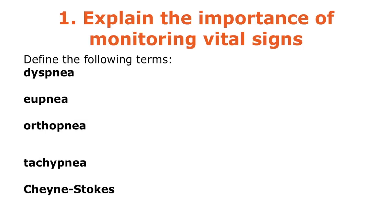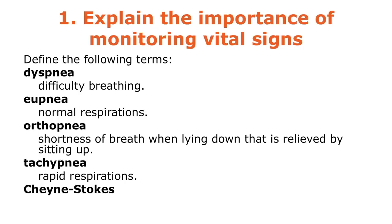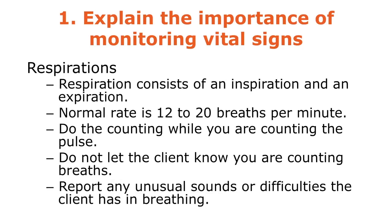Dyspnea means difficulty breathing. Eupnea means normal respirations. Orthopnea is shortness of breath when lying down, relieved only by sitting up. Tachypnea means rapid respirations — 'tachy' meaning rapid. Cheyne-Stokes respiration is alternating periods of slow, irregular respirations and rapid, shallow respirations. Normal respiratory rate is 12 to 20 breaths per minute.